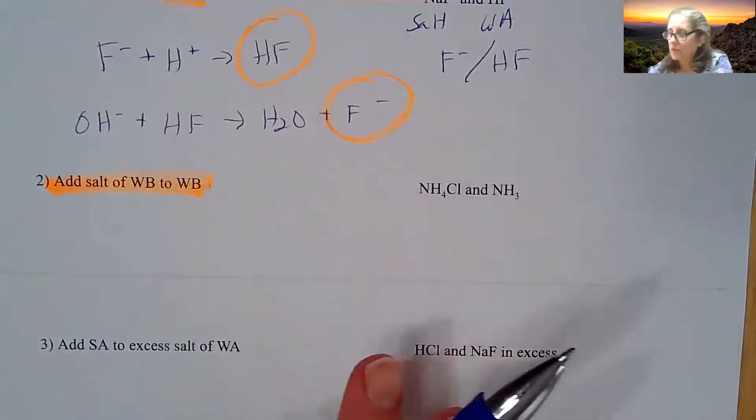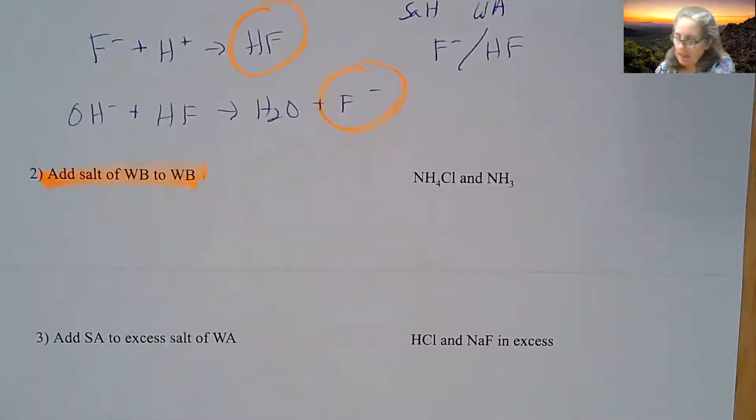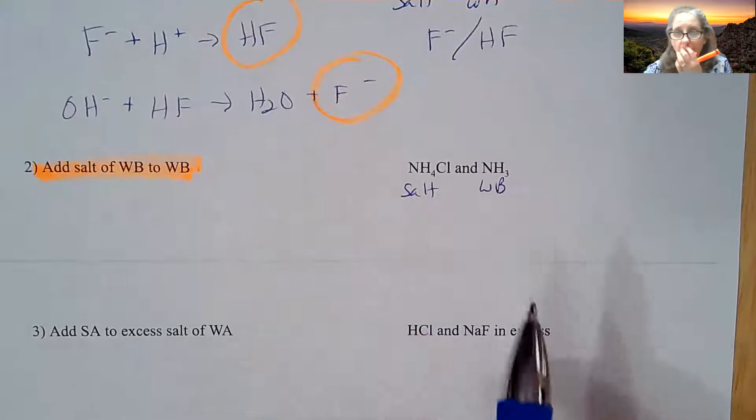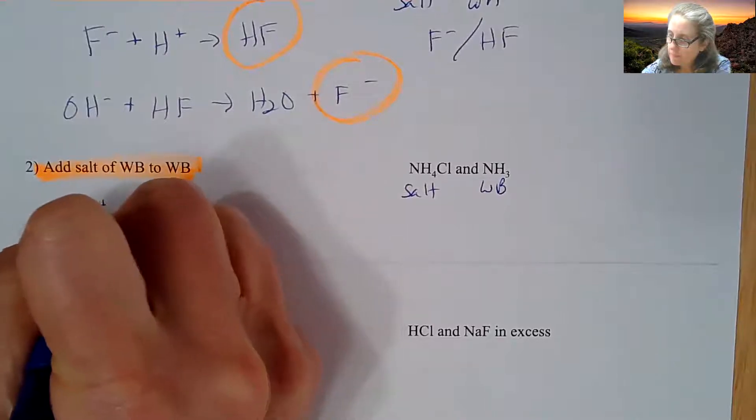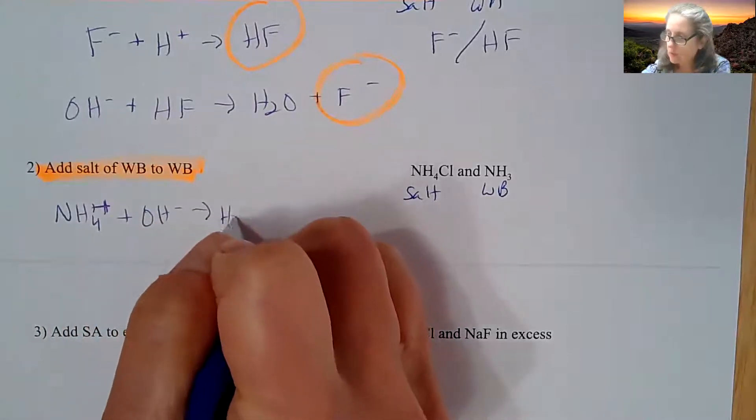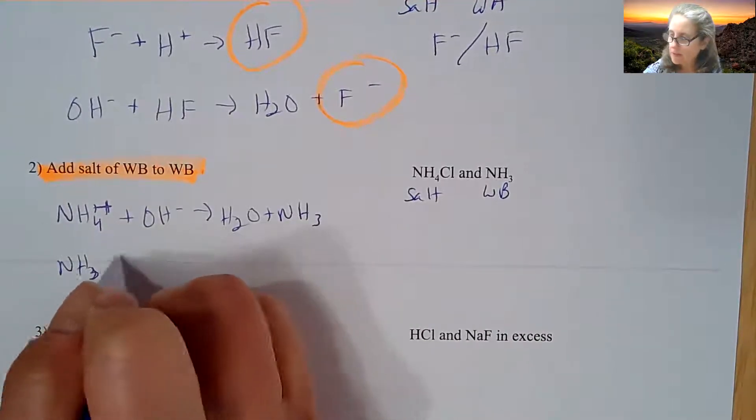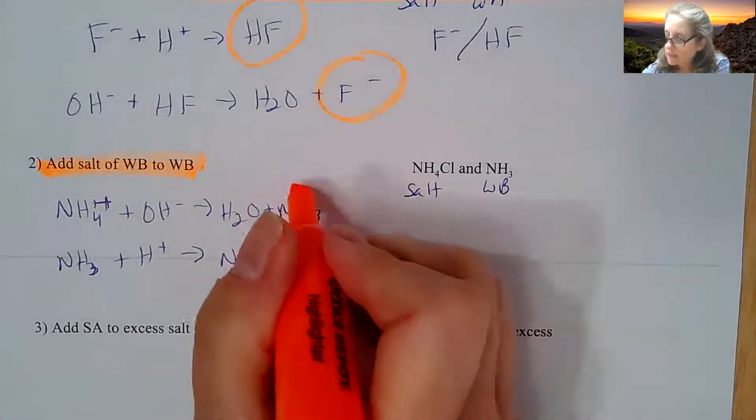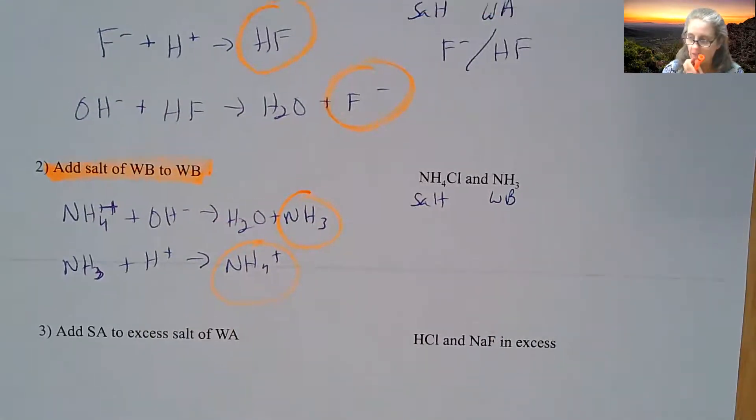Adding a salt of a weak base to a weak base. Again, your major one that you're going to have is ammonia and ammonium salts. So NH4+ is going to react with any base that gets introduced and you get water and ammonia. And then the ammonia being a base is going to react with any acid that's added to make more ammonium. The cool thing about buffers is that they regenerate themselves.